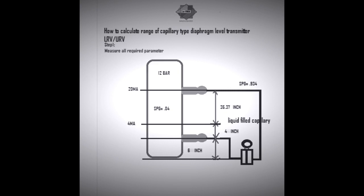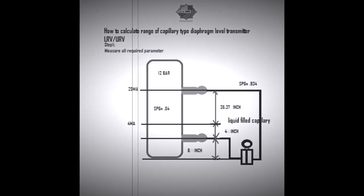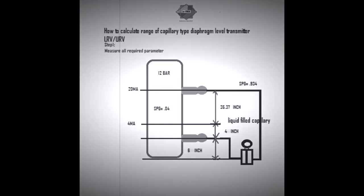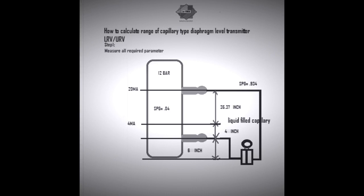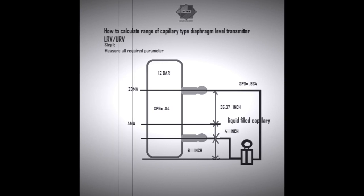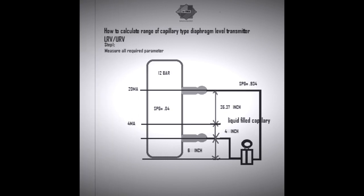As seen in the picture, the vessel scrubber has 12 bar pressure. The LP side tapping is located upside, which is 39.37 inches above the HP side tapping point, and the HP side tapping point is located downside. The process gas specific gravity is 0.84 and the capillary liquid fill specific gravity is 0.934. The transmitter is mounted 6 inches below the HP side tapping point, as shown in the picture, and the zero percentage point is 4 inches above the HP side tapping point.